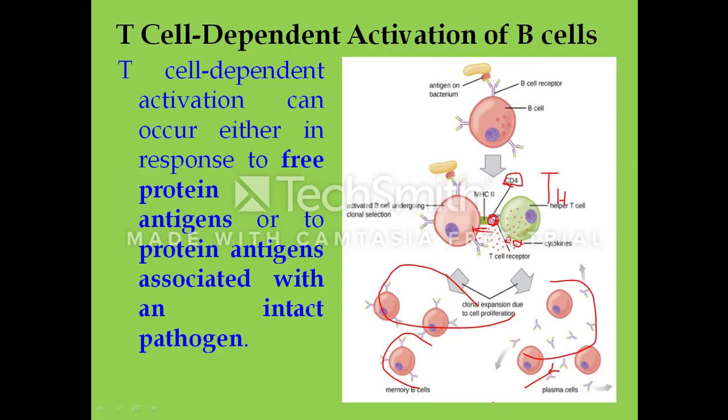In this lecture, you learned about B lymphocytes and humoral immunity. You learned how B cells are activated through two methods: directly by the antigen, and by T lymphocytes — especially TH cells — which secrete cytokines against the specific pathogen. I hope you understood today's topic. Thank you.